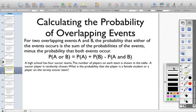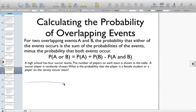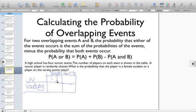Let's take a look at a scenario. A high school has four soccer teams. The number of players on each team is shown in the table. A soccer player is randomly chosen. We have two types of teams: a JV team and a varsity team. And then, of those teams, we have boys and we have girls. We have 17 boys on the JV team and 21 boys on the varsity team, 19 girls on the JV team, and 23 girls on the varsity team.